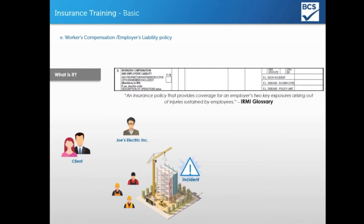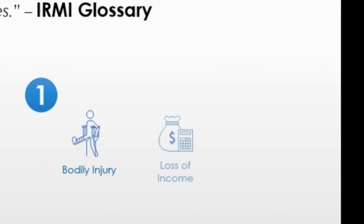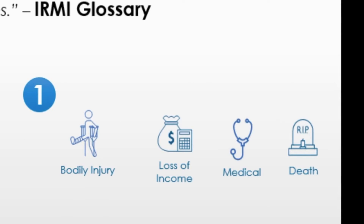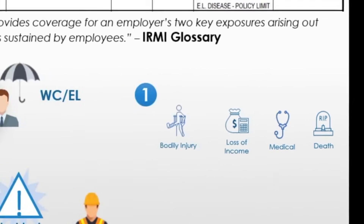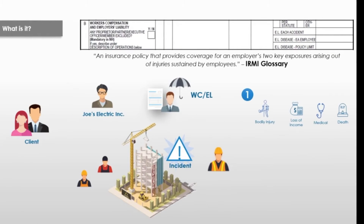ERMI defines workers' compensation as an insurance policy that provides coverage for employers' two key exposures arising out of injuries sustained by employees. Part one of the policy is workers' compensation, which covers the employer's statutory liabilities under workers' compensation laws. It offers benefits as determined by the state to an employee due to job-related injuries resulting from an accident or occupational disease, such as medical expenses, lost wages, etc. This policy also includes a death benefit, with the benefit being transferred to the employee's family. A lawsuit or proof of negligence is not required in order to obtain workers' comp benefits.